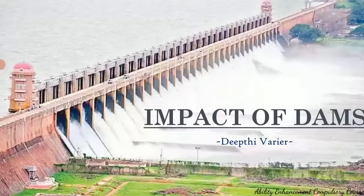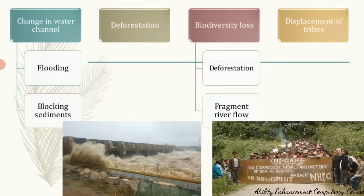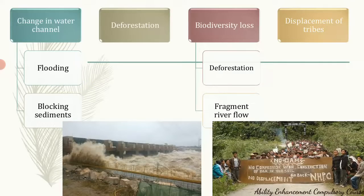Despite all these benefits, dams have brought about a change in the morphology of the river's water channel, leading to many negative impacts downstream. The first major impact is flooding downstream. When the volume of water released is much beyond the carrying capacity of the stream, it leads to flooding during the rainy seasons.